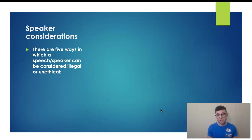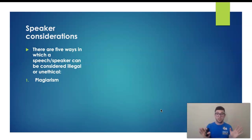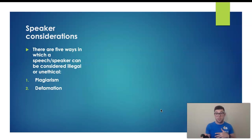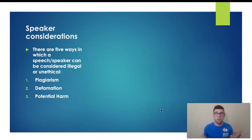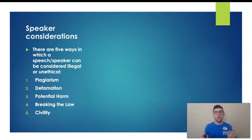There are five ways in which a speaker can be considered illegal or unethical when giving a speech. The first is plagiarism — you want to avoid that at all costs. Next, you want to avoid defamatory speech, which is a little different than hate speech and freedom of speech. You don't want to put your audience in potential harm or clear and present danger. You obviously cannot give speeches about breaking the law — we can challenge laws in speeches, but we cannot break them. And finally, we have to be civil and always think about the audience.